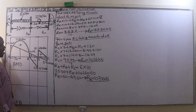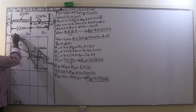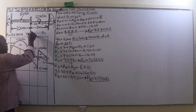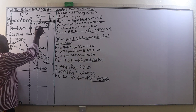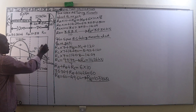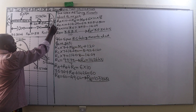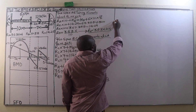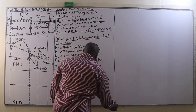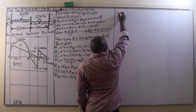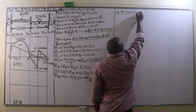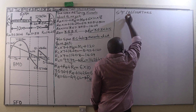We are going to write our reactions on the loaded diagram: RA is 35.36 kN. Those are the reactions, and now we are going to calculate the shear forces — SF calculations.